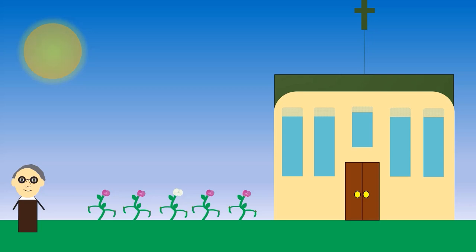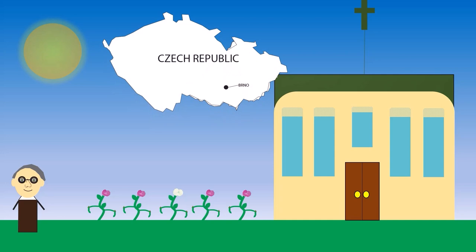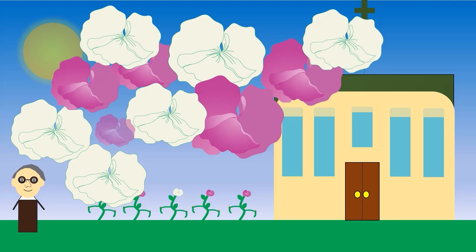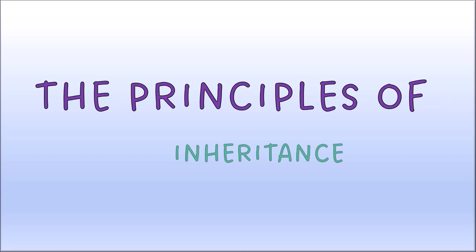Gregor Mendel was an Augustinian friar known as the Father of Genetics. At his monastery in Brno, Moravia, he bred pea plants, cultivating thousands in just eight years to create hybrids. These observations led to one of the most important experiments in genetic history: the Principles of Inheritance.